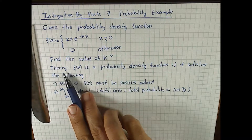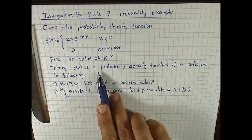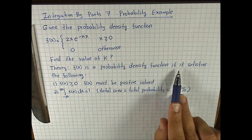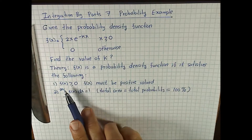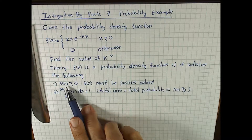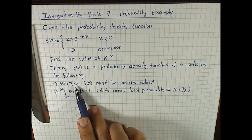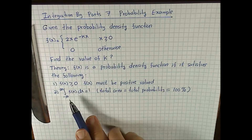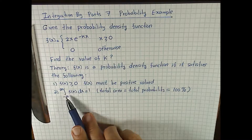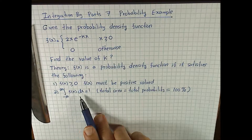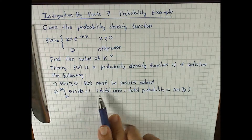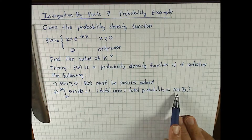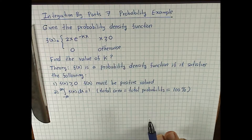Here is the theory. f of x is a probability density function if it satisfies the following: first, f of x is positive valued — it's larger than 0. Second, the integral of the function over the entire interval is 1. The total area equals total probability, which is 100%.